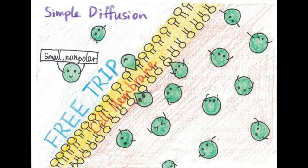Simple diffusion is the random movement of molecules from a region of higher concentration toward one of lower concentration. Osmosis is the movement of water through a semi-permeable membrane toward a higher concentration of solute.